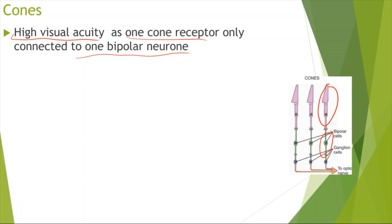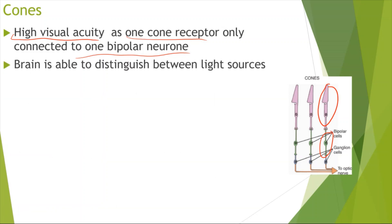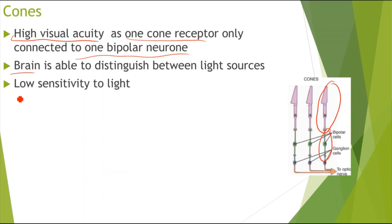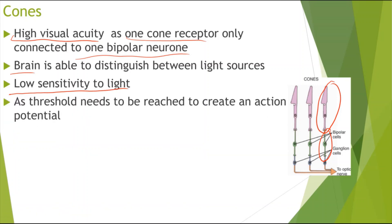As we saw in rod cells, several rod receptors were connected to one bipolar neuron, giving low visual acuity. Because only one cone receptor is connected to one bipolar neuron, the brain is able to distinguish between light sources, which is why cones have high visual acuity. However, cone cells have low sensitivity to light because there is no summation of generator potentials and no retinal convergence, making it harder for generator potentials to add up to create an action potential.